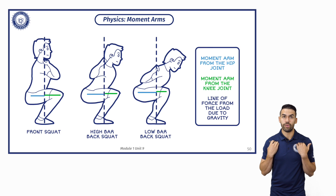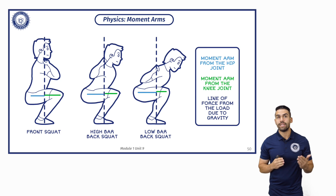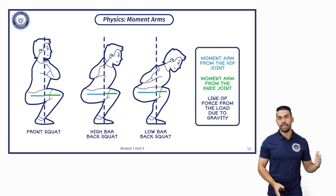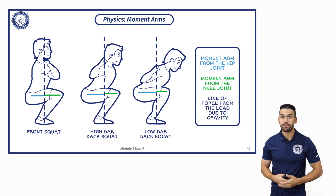The bar is on the front of the shoulders as opposed to the back of the shoulders. So that increases the distance from our hip joint to the line straight down from the bar that the force from that bar makes.